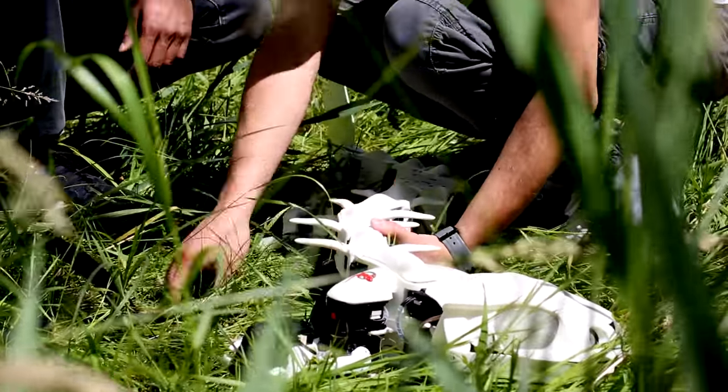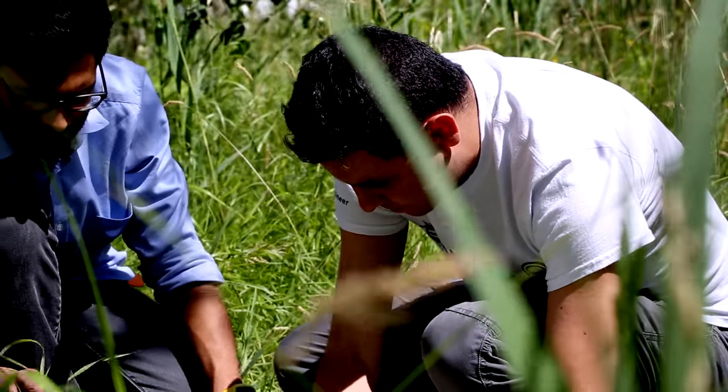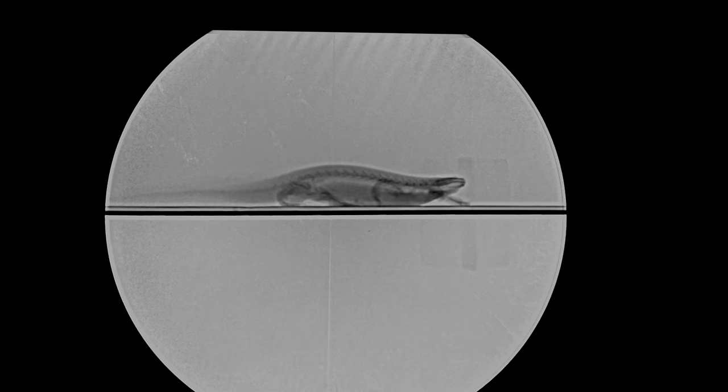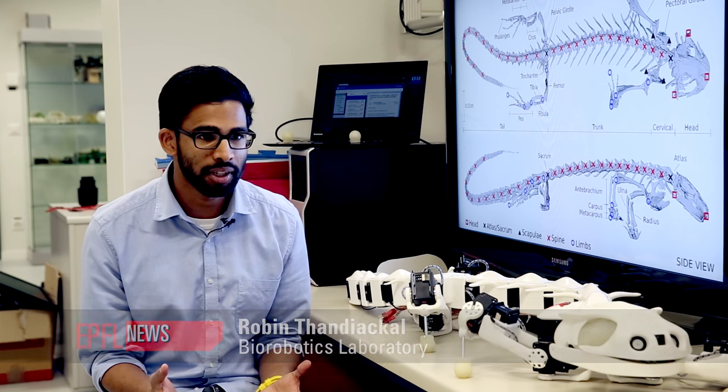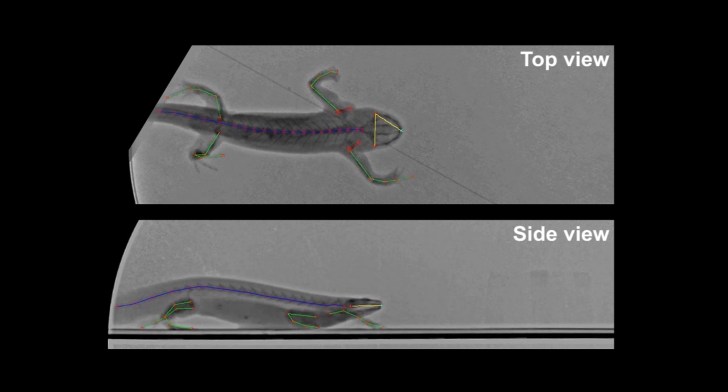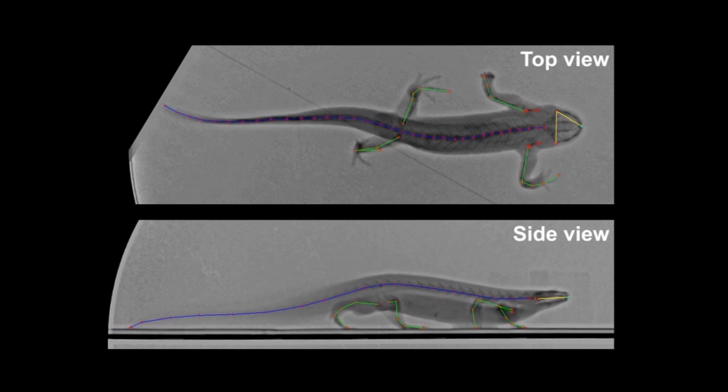So the novelty of this work is really the approach we took to try to be as close as possible to the real physics of the body. The species is called pleurodelis. We looked at detailed x-ray recordings from the animal so we could track the bones in 3D space. And that enabled us to create a very detailed model of the movements of the bones of the animal.